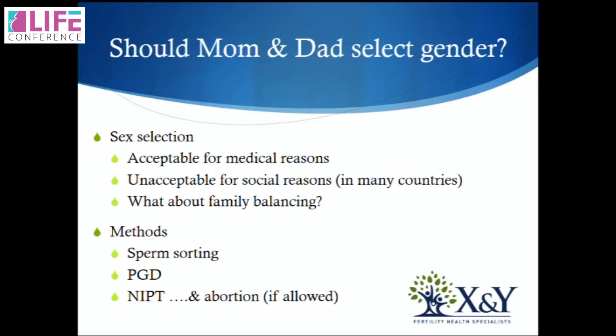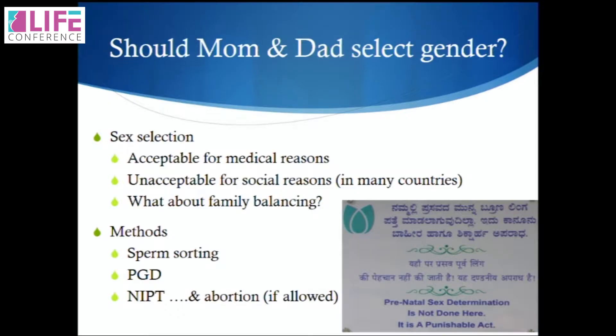What about gender — should mum and dad select for gender? Sex selection is acceptable for some medical reasons, but selecting for social reasons is unacceptable in many countries. You could argue for family balancing — if you have five daughters, could you have a son? That is more debatable. Methods for sex selection include sperm sorting (not 100%), PGD (which is 100%), and NIPT. With NIPT, should you consider abortion if you don't want the sex of that child? I was glad to see when I visited a clinic here that prenatal sex determination is not done — it's a punishable act.